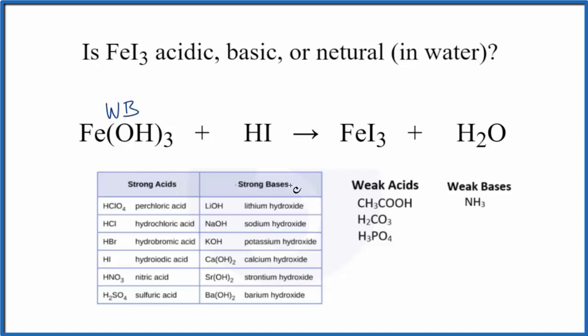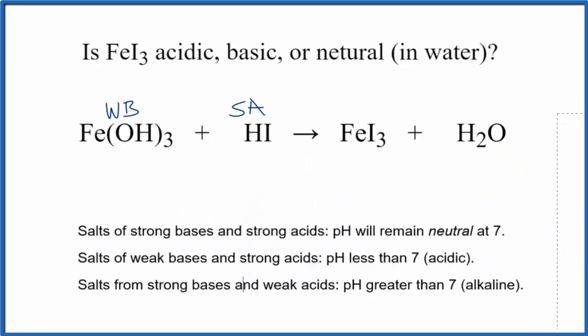Hydroiodic acid, HI, right here, that's a strong acid. So I'm just going to write SA up here. So we have the strength of the acid and the base. Now we can figure out the pH of the FeI3 dissolved in water.